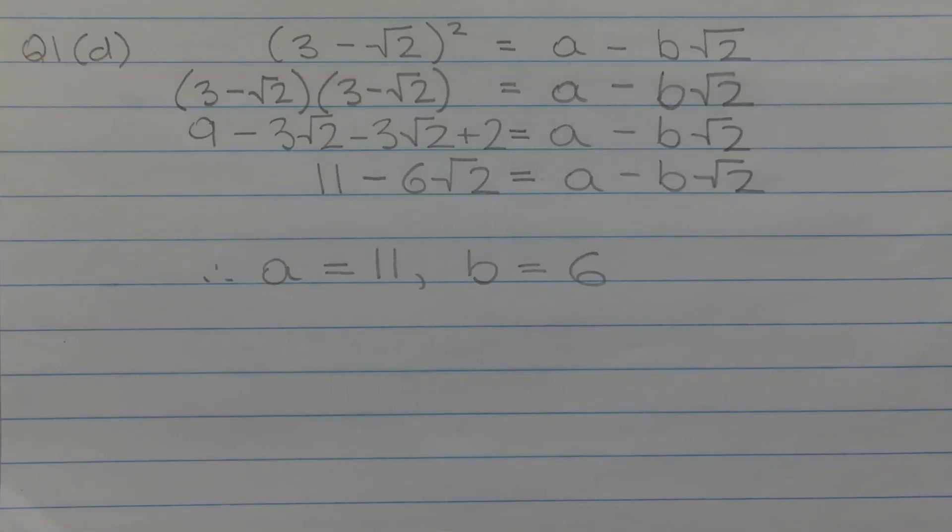The first step is to expand the left hand side of this identity. That is, expanding the perfect square 3 minus the square root of 2 in brackets squared. Since this is a perfect square, there is a shortcut we can apply to make the expansion a little quicker.